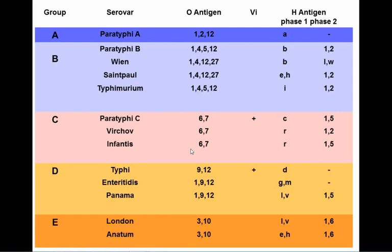Serotyping is necessary to determine which subspecies is present. This is the Kauffman-White classification for Salmonella, based on O antigen (LPS), H antigens (flagella), and K antigen (capsule). Salmonella are complicated because they have two types of flagella that alternate in expression — phase 1 and phase 2 — or just one type. The VI antigen is the virulence antigen, a capsule antigen present only in Salmonella typhi and Salmonella paratyphi type C.